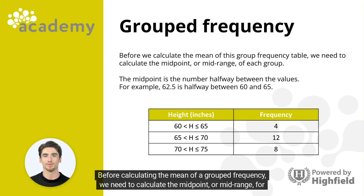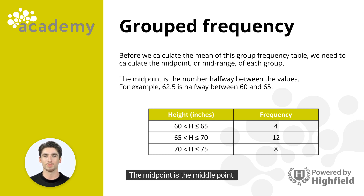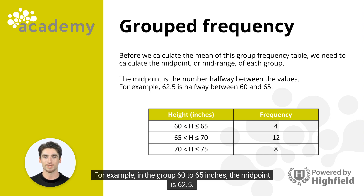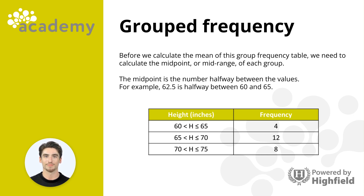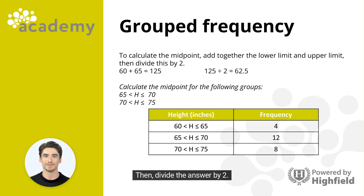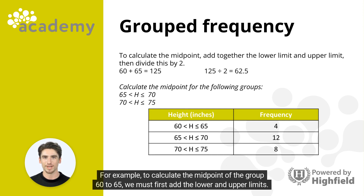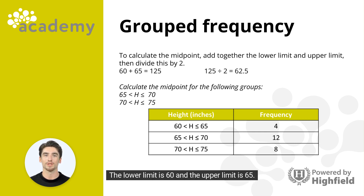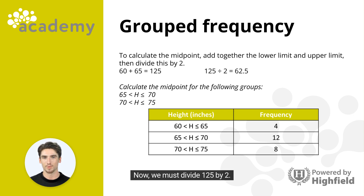Before calculating the mean of a grouped frequency, we need to calculate the midpoint or midrange for each group. The midpoint is the middle point — the number halfway between the values. To calculate the midpoint, add together the lower limit and upper limit, then divide by 2. For example, for the group 60 to 65, the lower limit is 60 and the upper limit is 65. Adding them gives 125, and 125 divided by 2 gives a midpoint of 62.5.